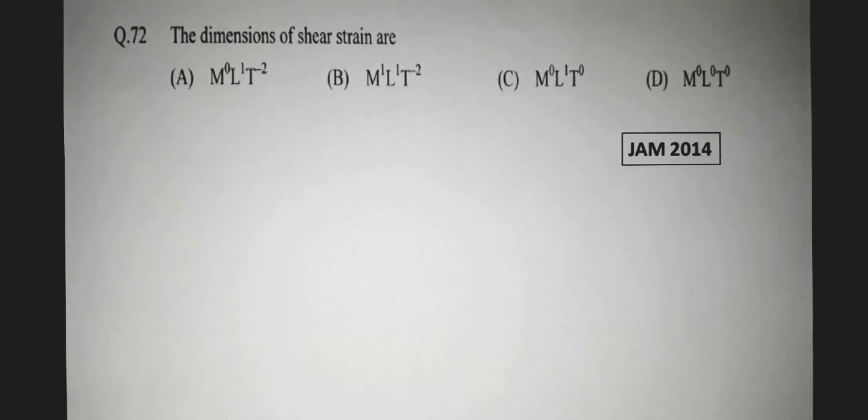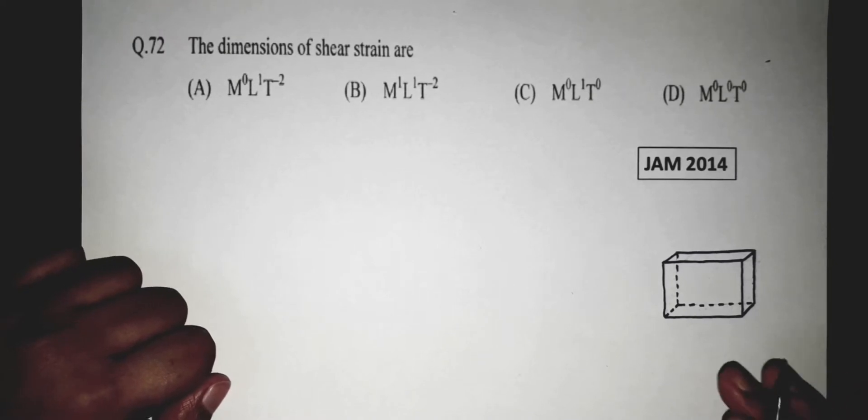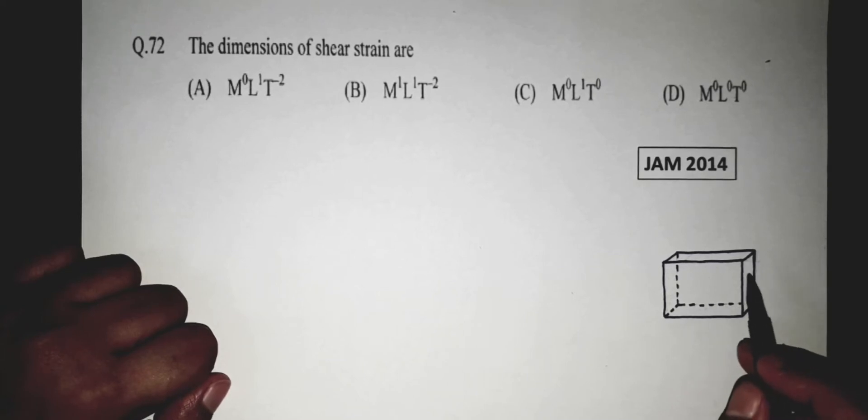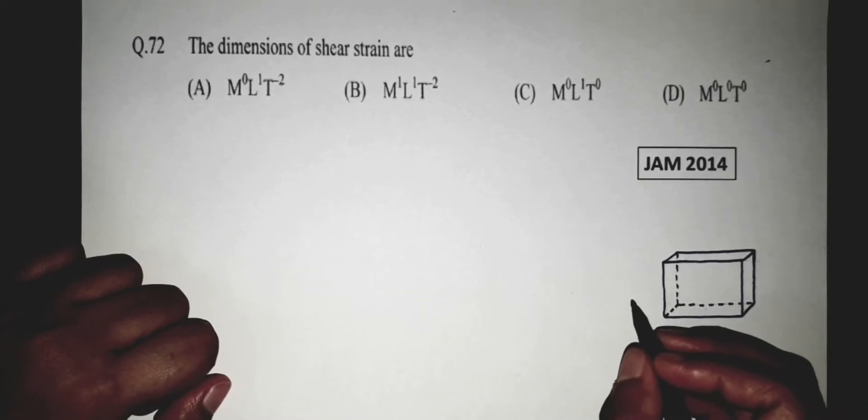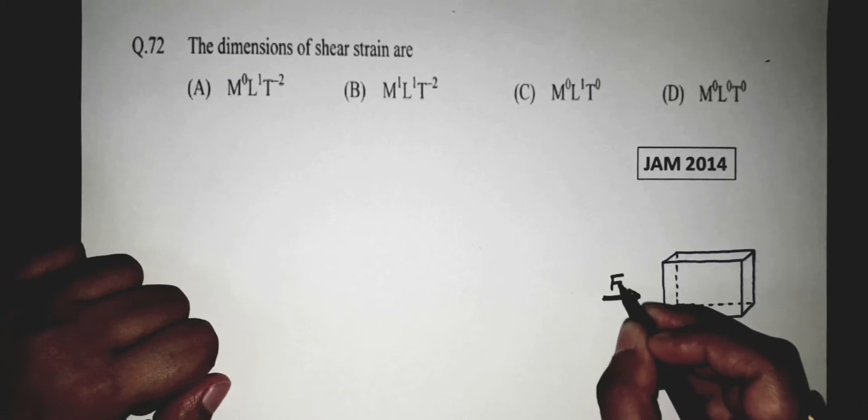Okay, now what is shear strain? Suppose this is a three-dimensional object. It can be any object. Now a force F is applied to it in this direction.